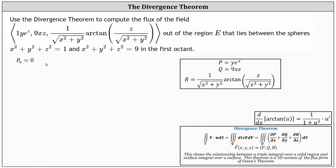Now we find the partial of Q with respect to y by differentiating nine x z with respect to y, treating x and z as constants. Therefore the partial of Q with respect to y is also equal to zero.